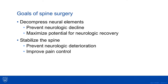So what exactly are the goals of spine surgery? Well, mainly it's twofold. One is you want to decompress neural elements — whether that be the spinal cord or nerve roots — and thereby prevent neurologic decline. You also want to maximize potential for neurologic recovery, should they have any neurologic deficit on presentation. Additionally, you want to stabilize the spine in cases of any clinical or subclinical instability to prevent neurologic deterioration and hopefully prevent pain.